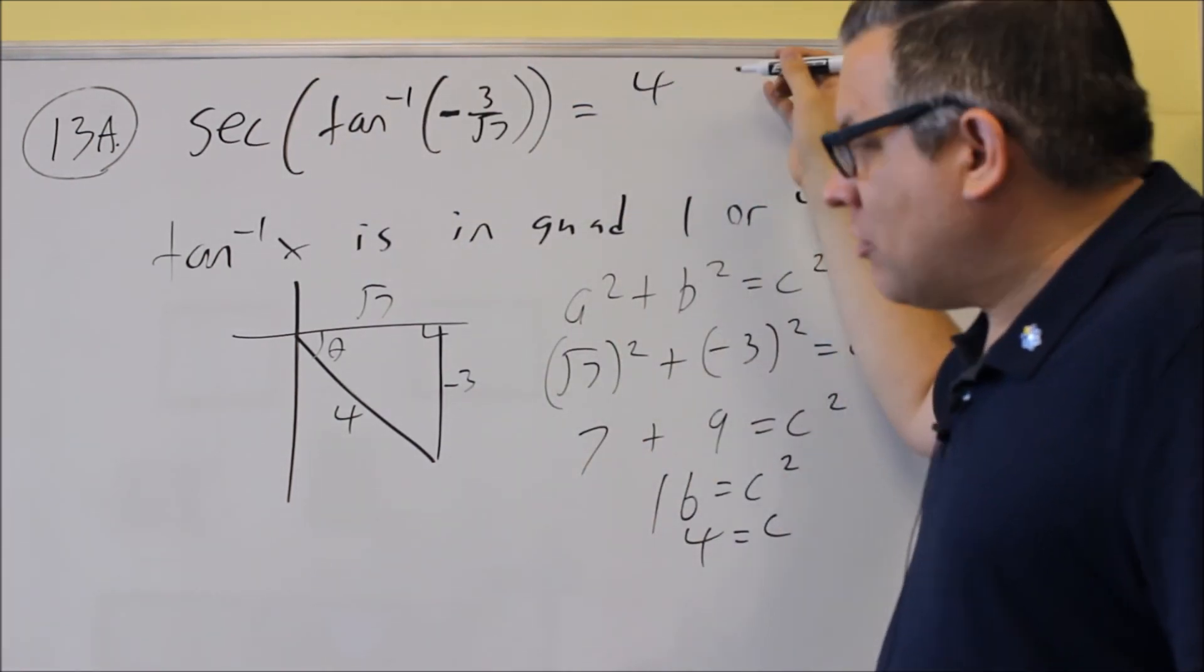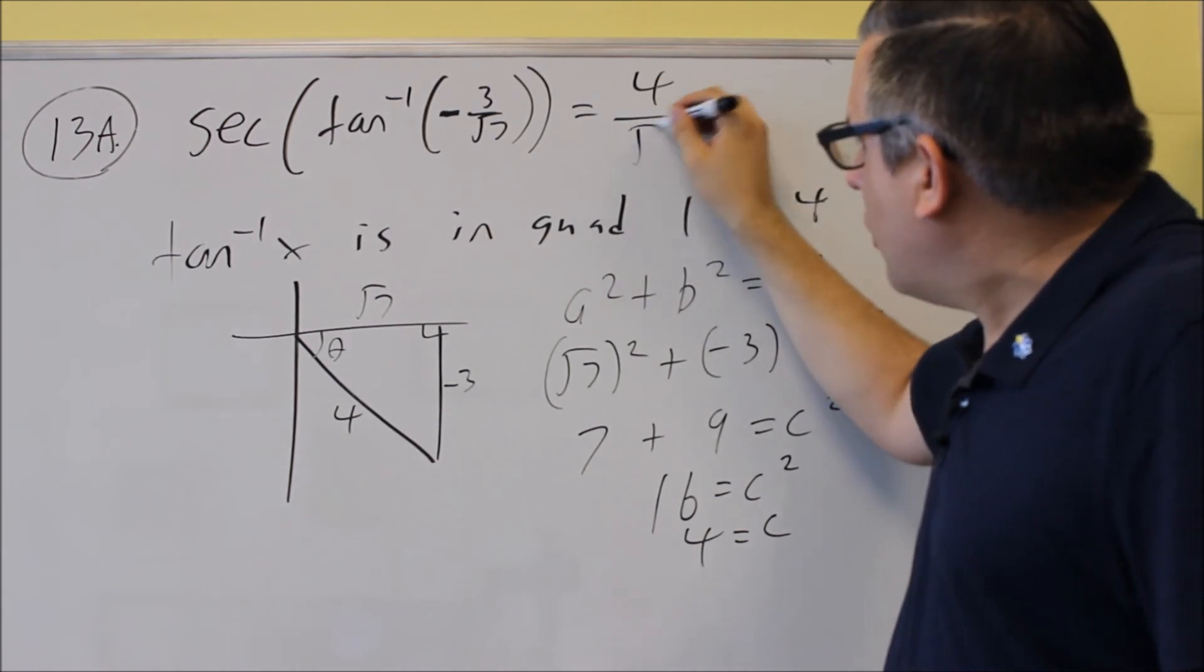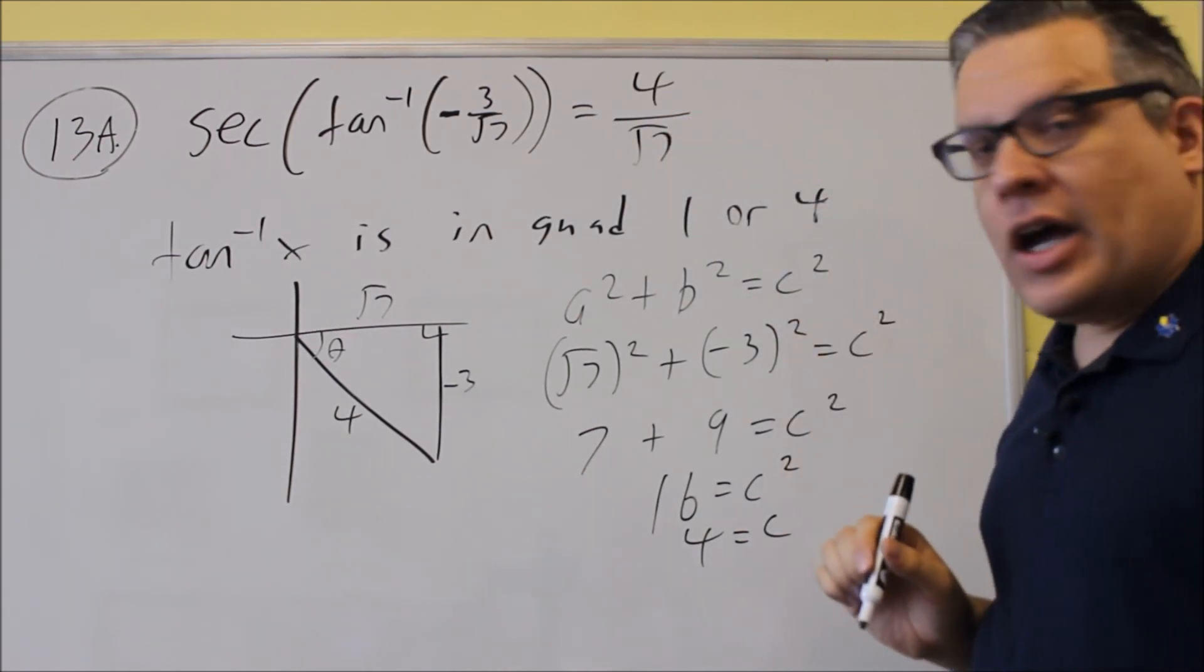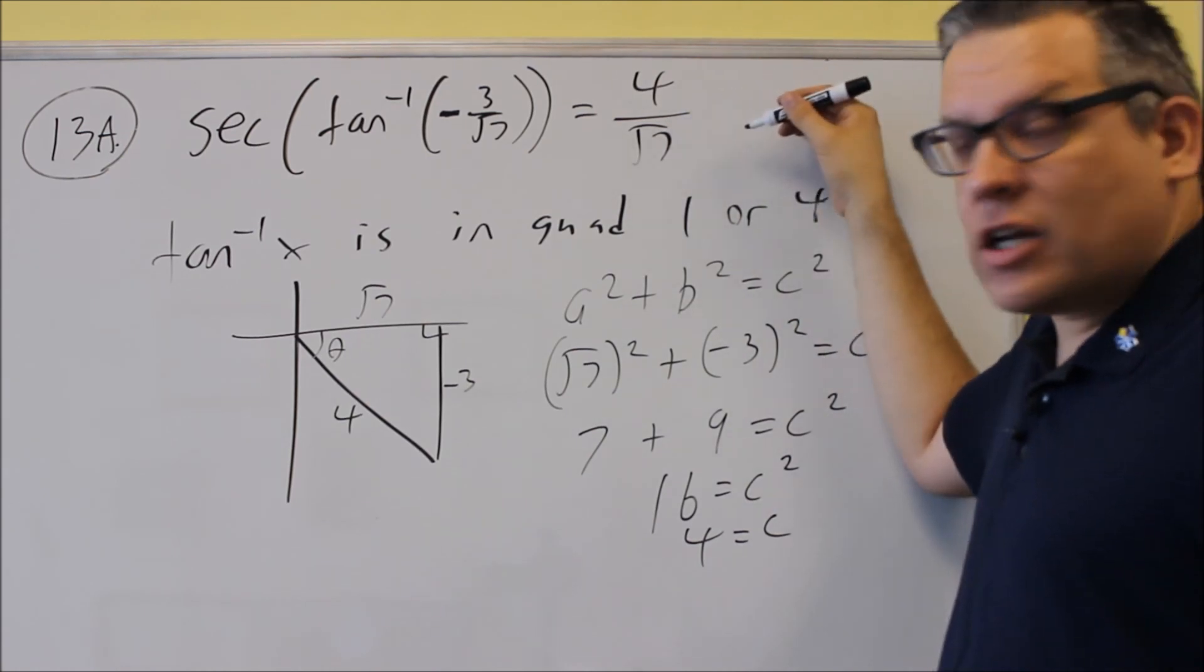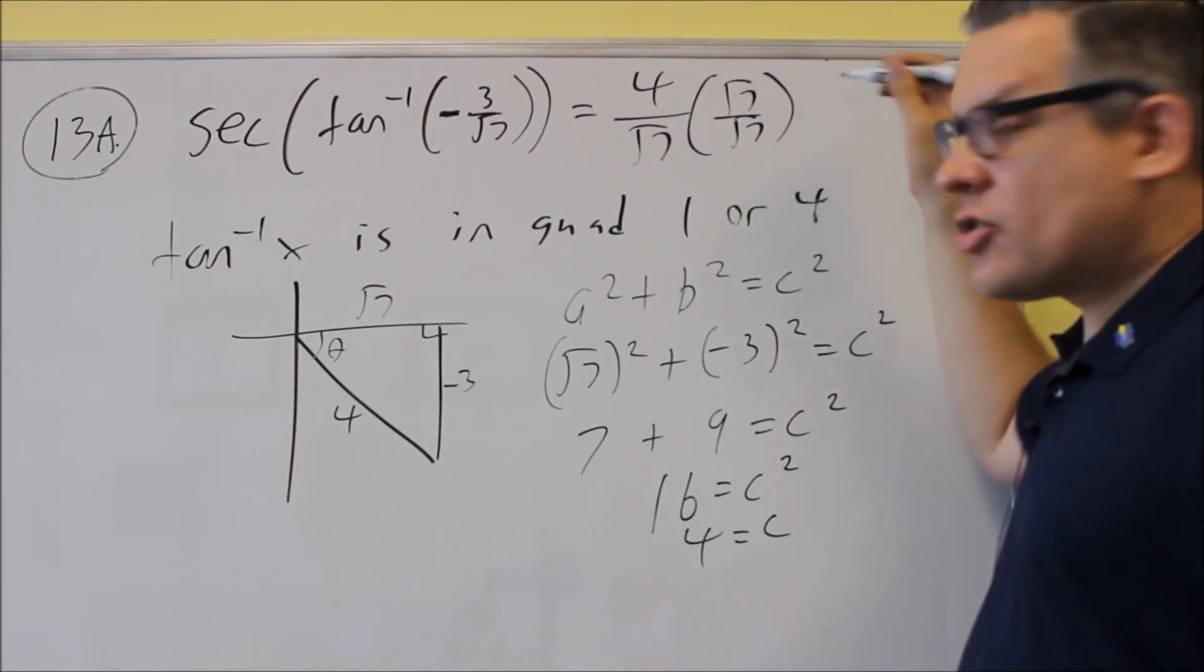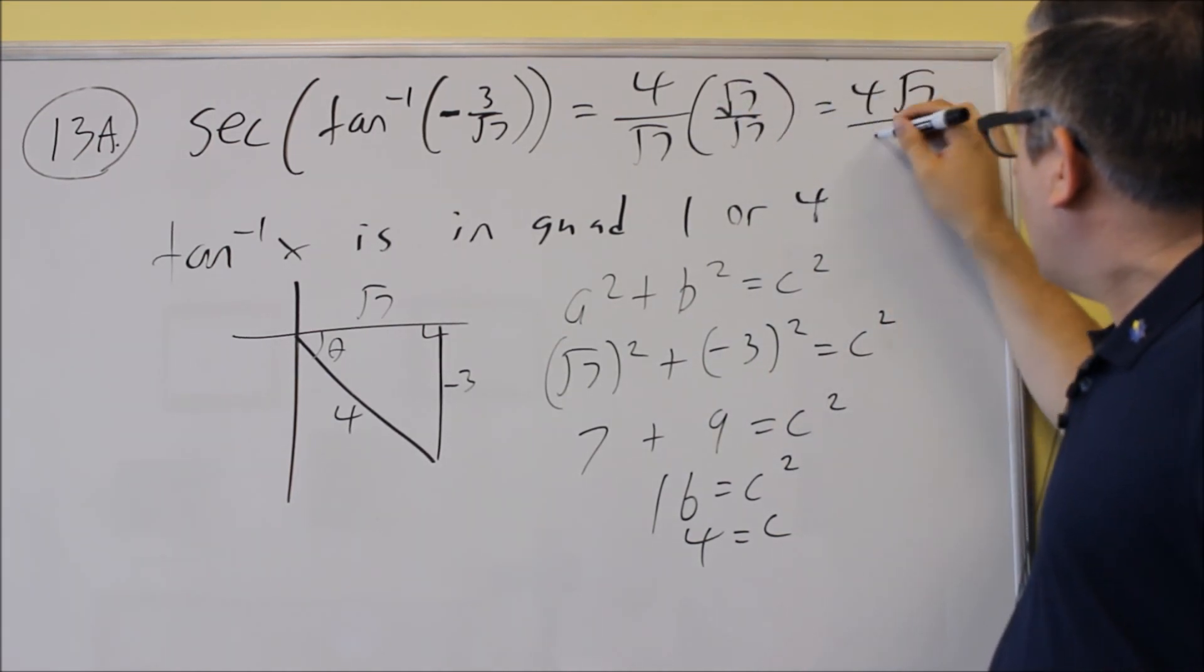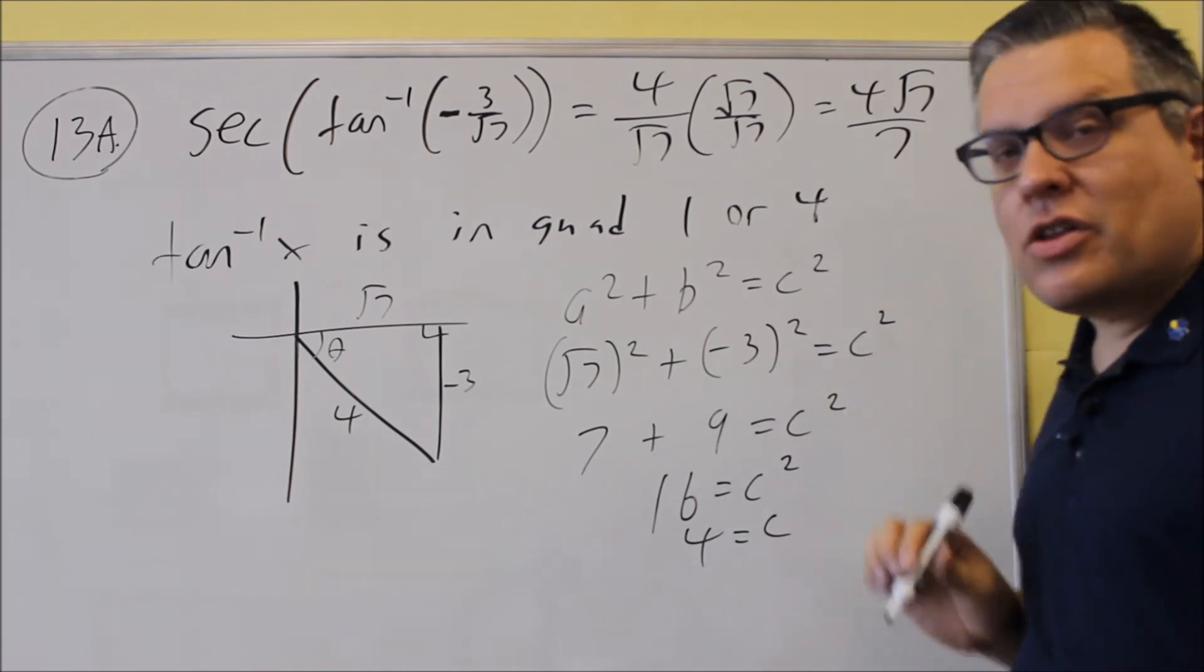So that's going to be 4, the hypotenuse, over the adjacent, which is square root of 7. And because we have a square root in the bottom, we're going to rationalize it. We'll multiply top and bottom by square root of 7 over square root of 7, and we'll get 4 square root of 7 over 7. This would be the exact value.